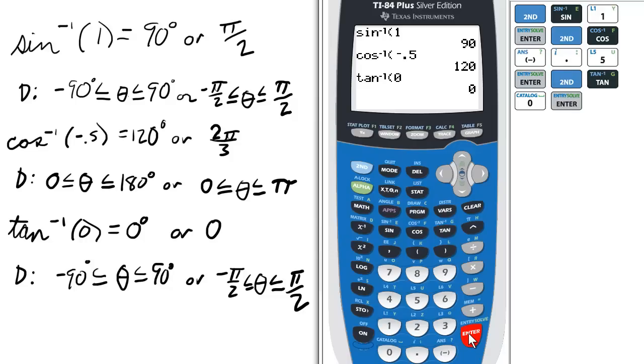Enter. The inverse tan of 0 is 0. Again, the domain restriction for arc tan or inverse tan is usually the same as arc sine, which is negative 90 to 90 degrees for theta, or in radians, between negative pi over 2 to pi over 2. Thanks.